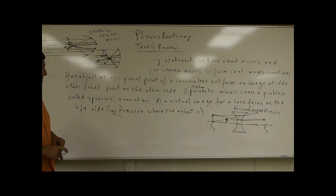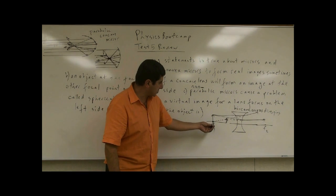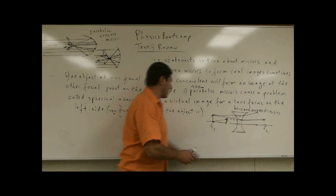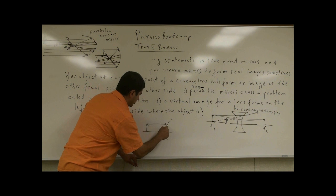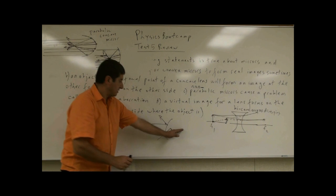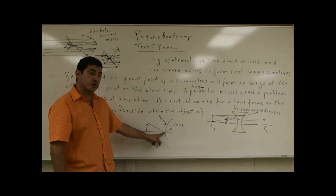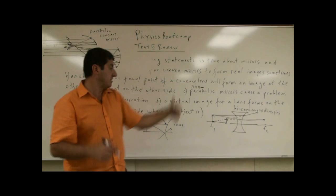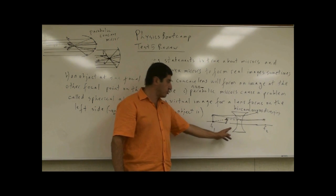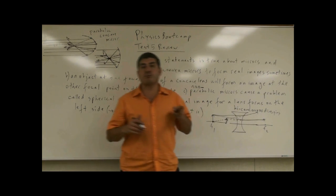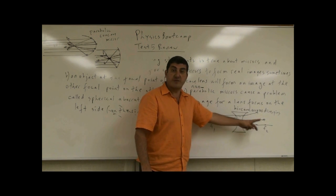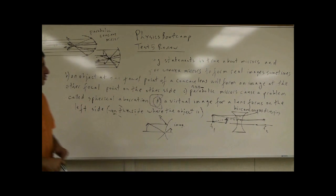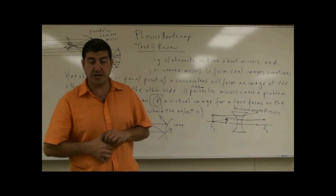D: A virtual image for a lens forms on the left side, on the side where the object is. We already mentioned that — a diverging lens forms a virtual image on the same side as the object. For lenses, the virtual image is on the left side. For mirrors, the virtual image is on the opposite side, behind the mirror, because the mirror bounces the rays. For a lens, the virtual world is on the left because the beam is supposed to go through the lens and form a real image on the other side. So the answer is D — true.